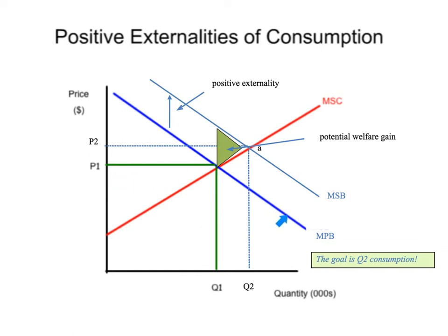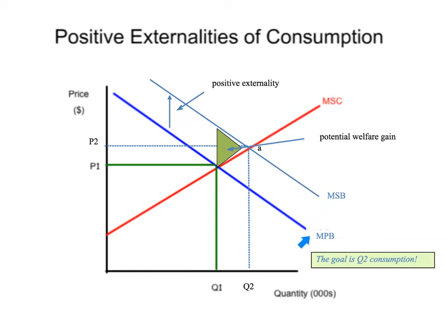The way that would look is that we've taken the marginal private benefit — that's you — which stays the same at P1, Q1. But what happens is there's an additional benefit to society in the fact that you're healthier, meaning I'm less likely to get sick. If I consume healthcare, you're less likely to get sick too. So society as a whole is going to benefit — social benefit is going to be greater than just the private benefit.